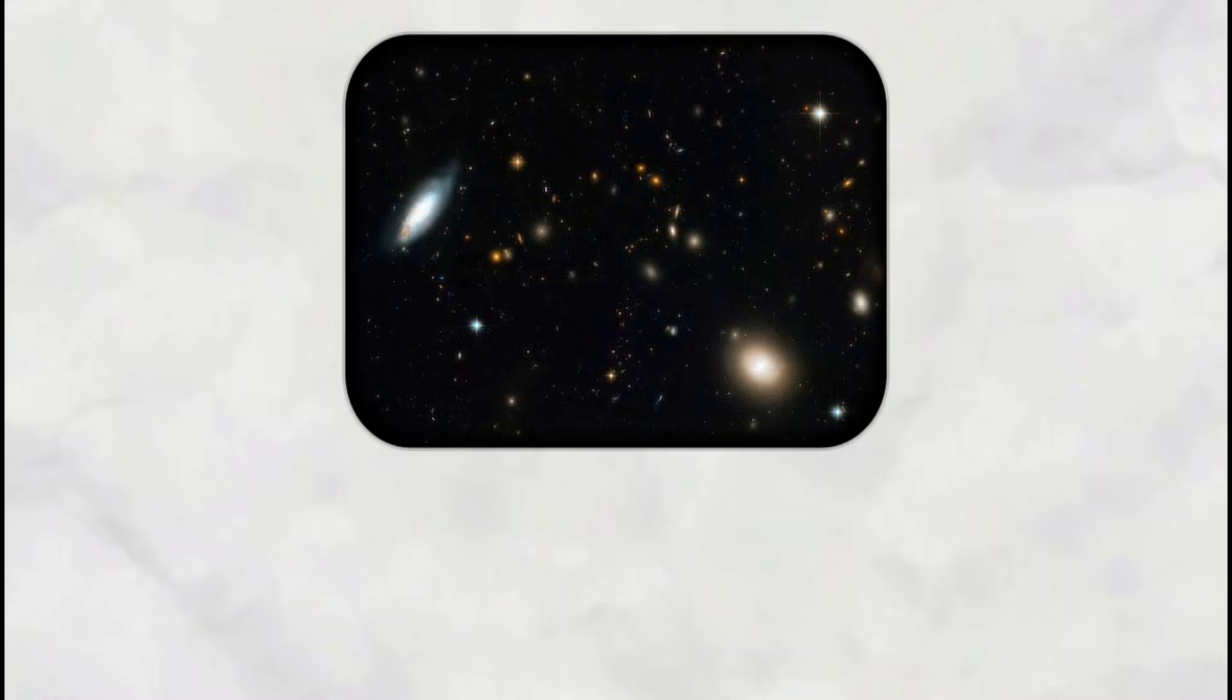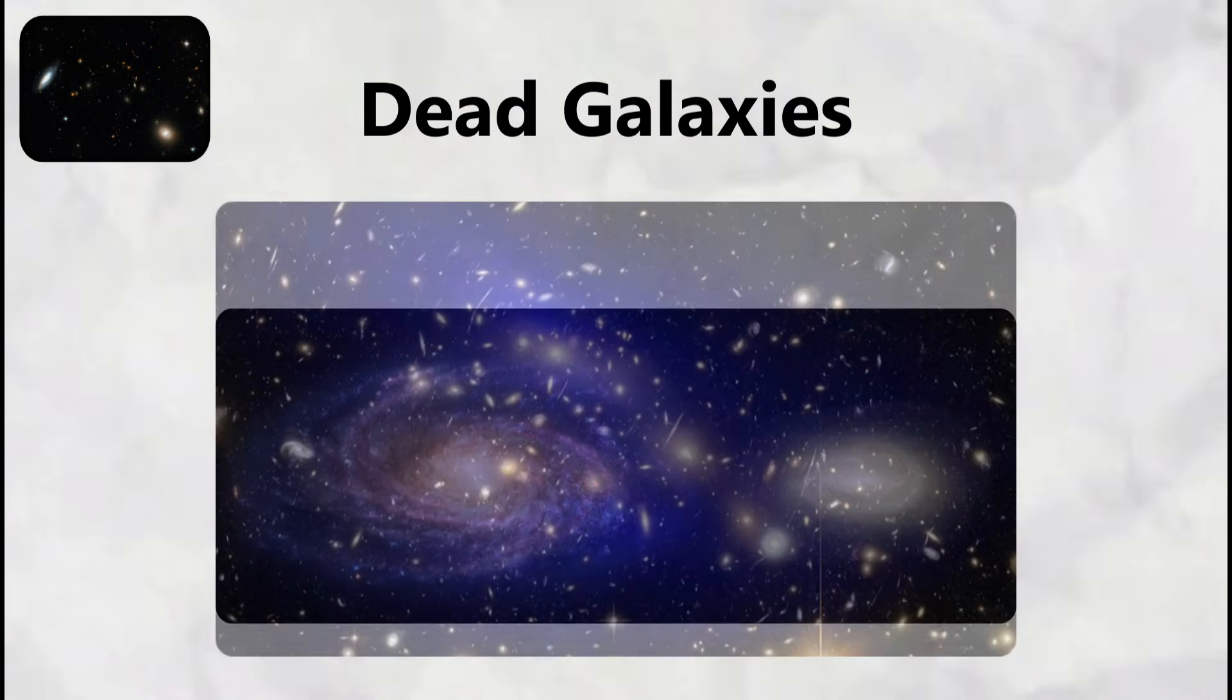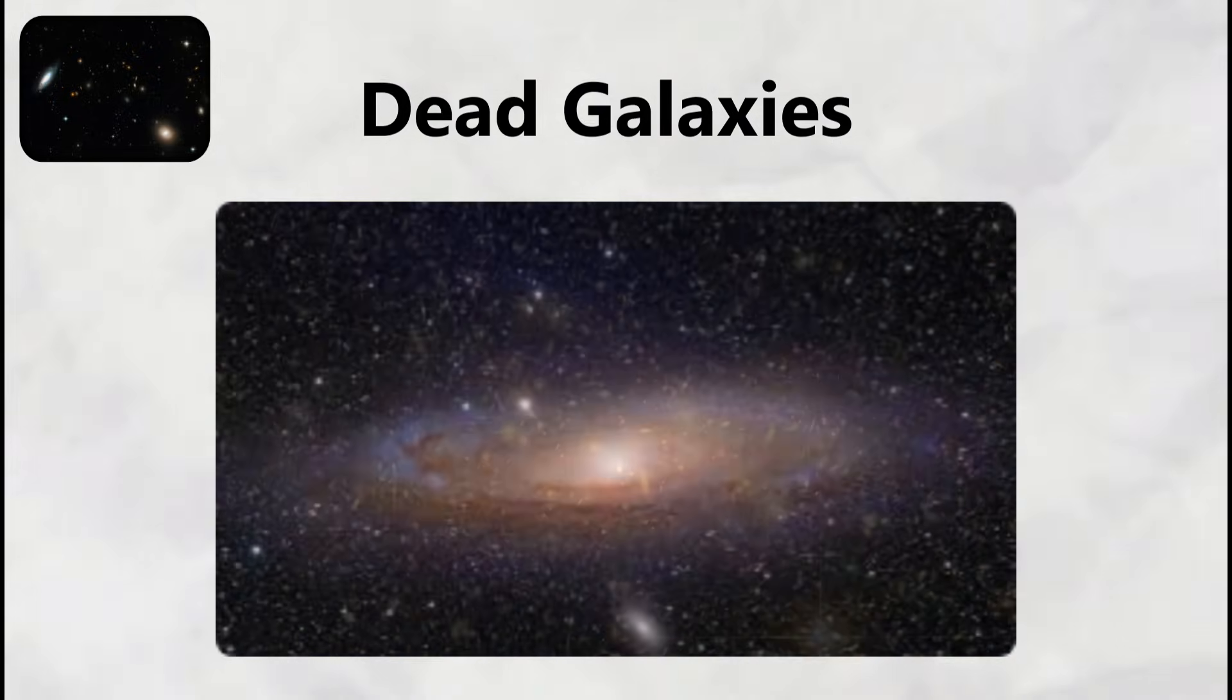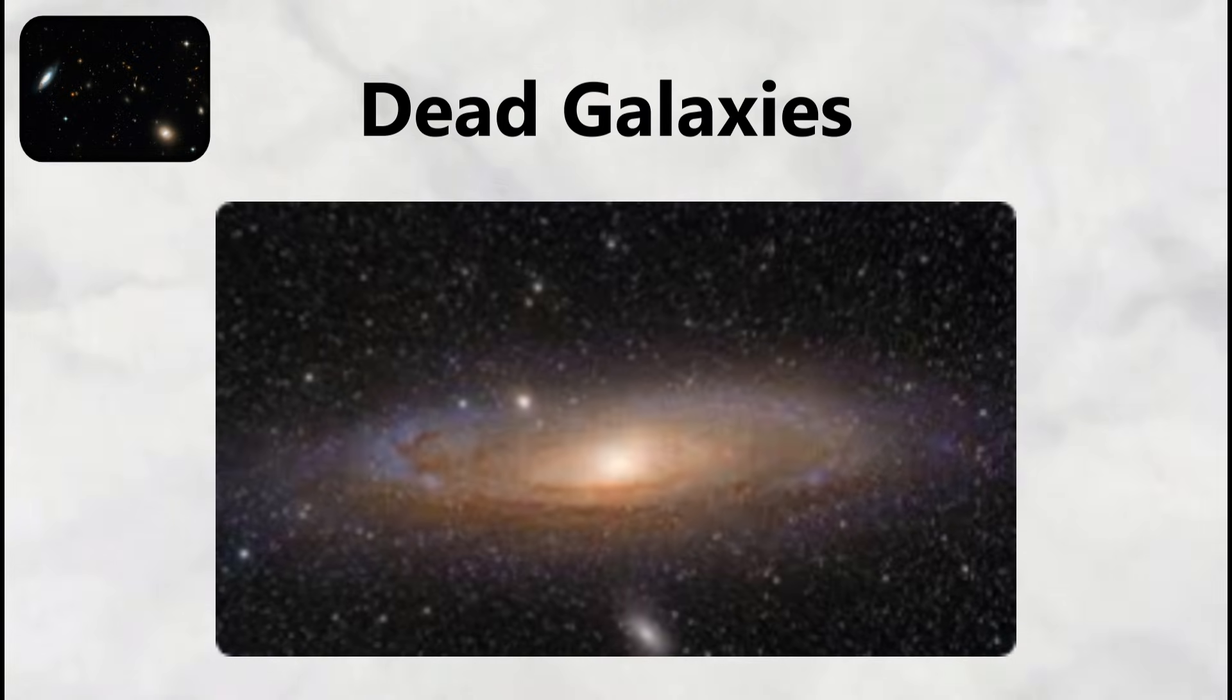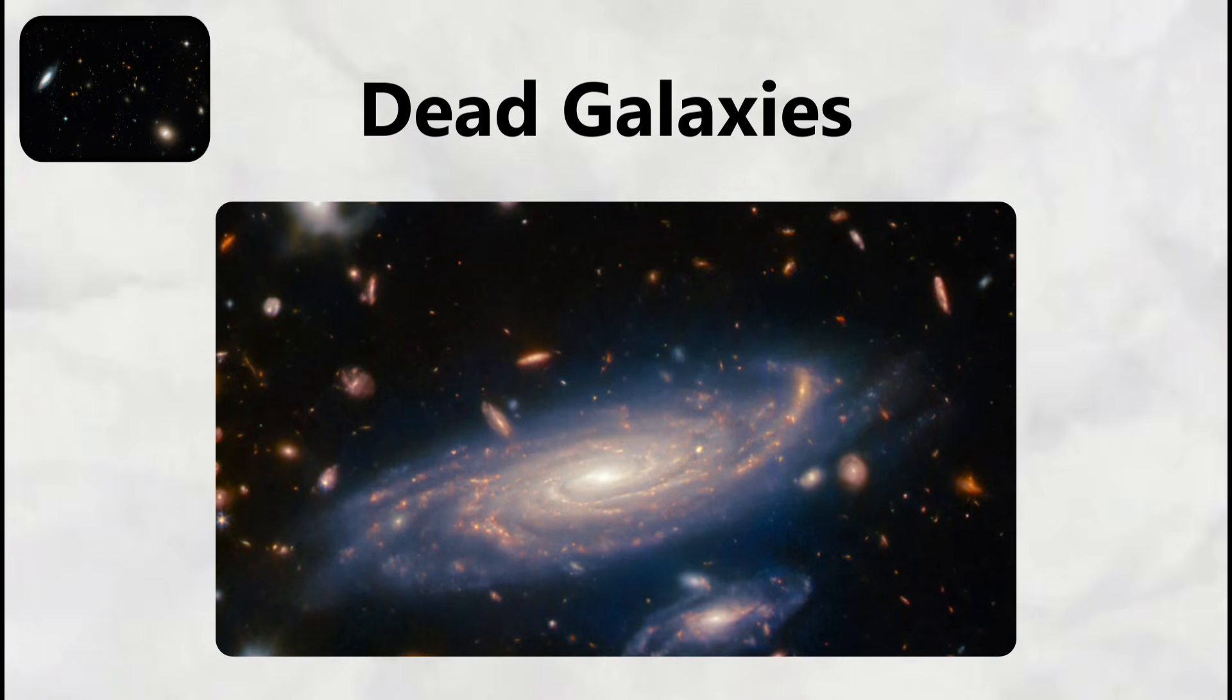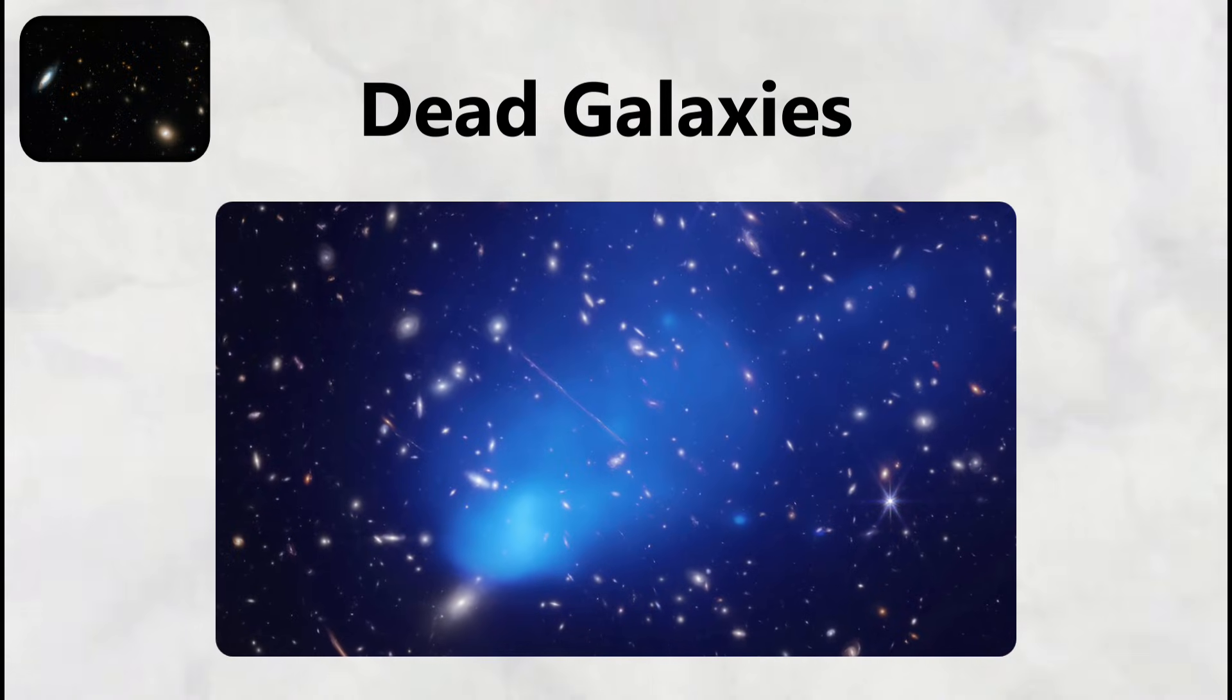Dead Galaxies. Galaxy Max 21291 represents a chilling vision of galactic death, a massive collection of stars that has completely ceased forming new stellar objects and now exists as a cosmic graveyard, slowly fading into darkness. Located 10 billion light-years from Earth, this galaxy appears as it existed when the universe was only 3.7 billion years old, making it one of the earliest examples of galactic death ever observed.